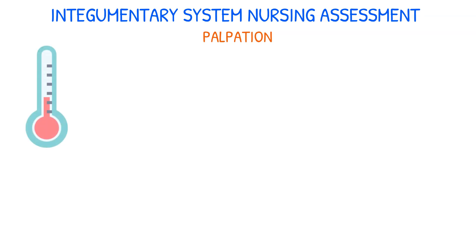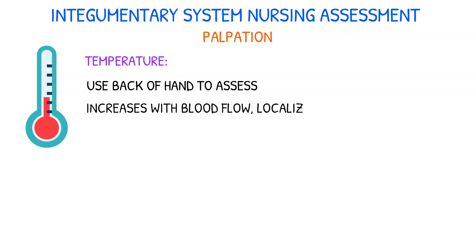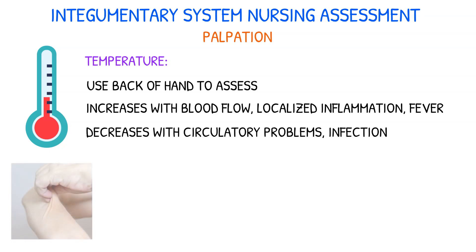Here are some things to keep in mind when conducting your palpation portion of the assessment. Temperature is an important aspect to assess. Use the back of your hand to determine if the skin is warm without being hot. Skin temperature can increase with blood flow, localized inflammation, or fever. Conversely, it can decrease with circulatory problems or infection.